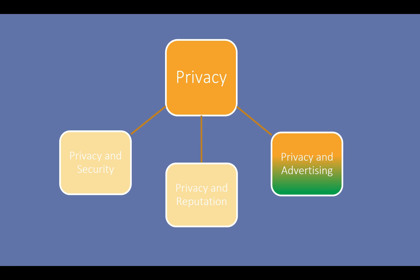This leads to the third area: privacy and advertising. Digital footprints consist of explicit acts and implicit trails. Explicit acts are the intentional use of online services, apps, and sites in which we recognize that we are leaving an imprint. The implicit trails relate to tracking where you go and what you do online in order to customize your user experience and market to you. These implicit trails can be linked across contexts to create a profile of what you do, think, associate with, and so on. Educators and parents can develop awareness in children that ads they see online are being targeted to them.